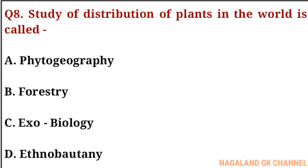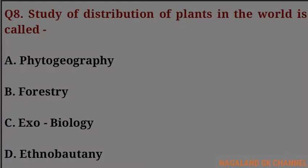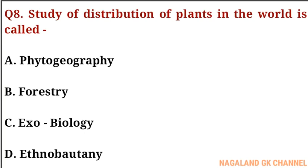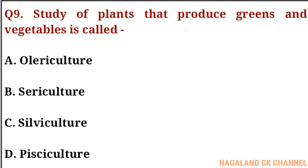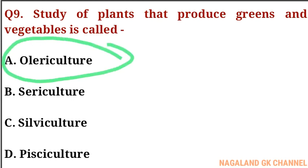Question number eight: the study of distribution of plants in the world is called what? The correct answer is option A, that is phytogeography. Question number nine: the study of plants that produce greens and vegetables is called what? The correct answer is option A, that is olericulture.